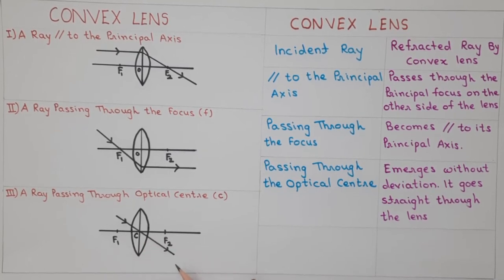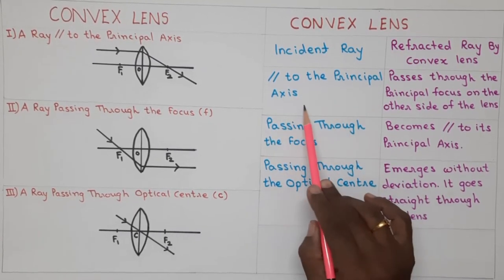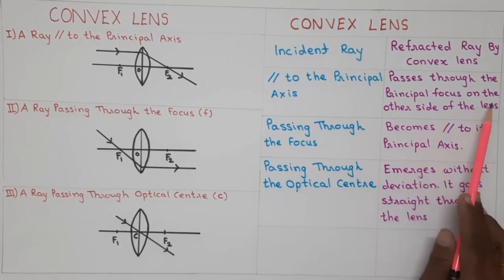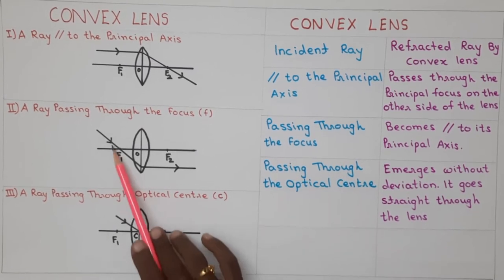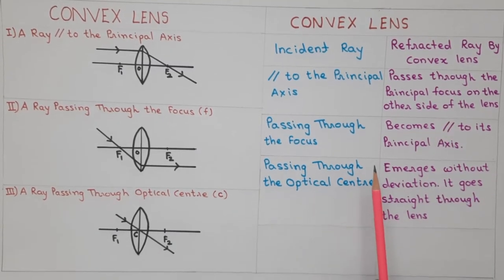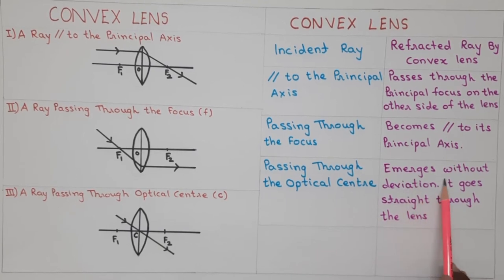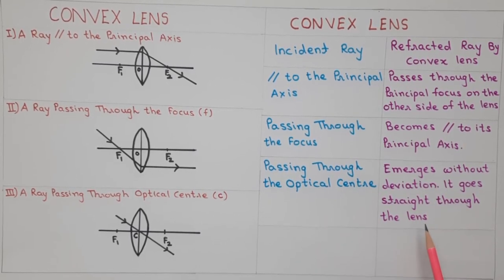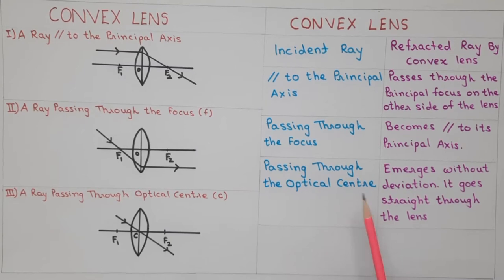Let's tabulate this. When the incident ray is parallel to the principal axis, it passes through the principal focus on the other side of the lens. When the incident ray passes through the focus, it becomes parallel to the principal axis after refraction through the convex lens. When the ray passes through the optical center, it emerges without deviation and goes straight through the lens. We should remember these three rays because we will use them to construct ray diagrams.